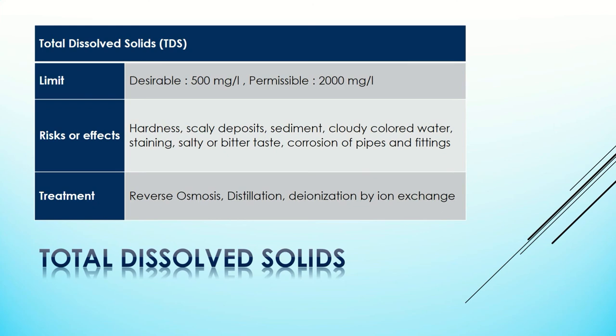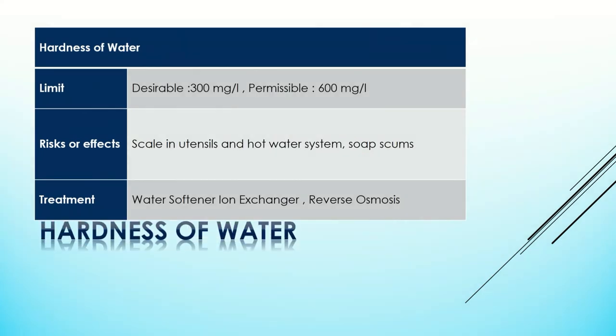Total dissolved solids: the acceptable limit for total dissolved solids set by BIS is 500 milligrams per liter, and if there is no alternate source in that area, this limit can be extended to 2000 milligrams per liter. If there is a greater amount of dissolved solids in water, it may increase the hardness of water. To avoid this problem, reverse osmosis, distillation, or deionization processes can be carried out.